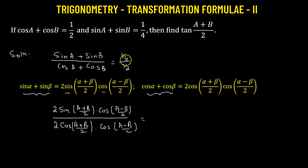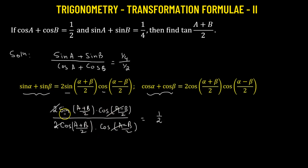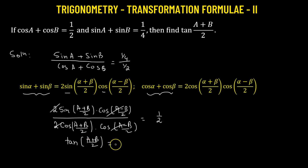This equals one quarter divided by one half, which is one half. We can now factor out the two and cosine of (a minus b)/2 from both numerator and denominator. We are left with sine over cosine, and since they share the same angle, this ratio is the tangent function. Therefore, tangent of (a plus b)/2 equals one half.